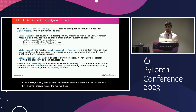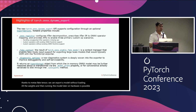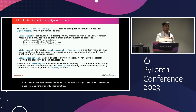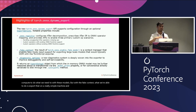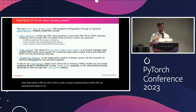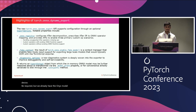We also have fake context, thanks to Meta's fake tensor. We can export a model without loading all the weights, and then run the model later on hardware. Compute's pretty expensive these days, and it's hard to always get enough compute to work with these models. But with fake context, we're able to export on a really simple machine without actually running the model, so we don't have to wait long on getting models exported and ready to run. We can do it on-prem or however we decide we want to export those models, and when it's time to actually run them, we already have the ONNX model ready.